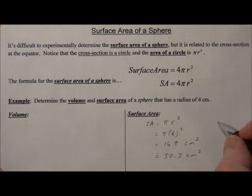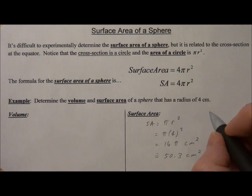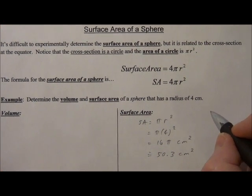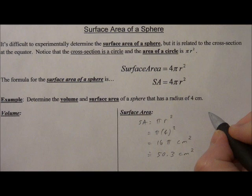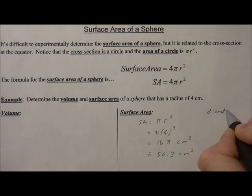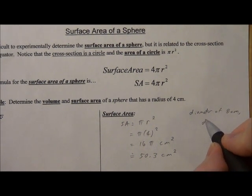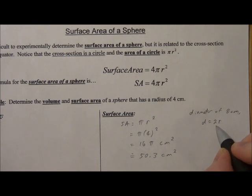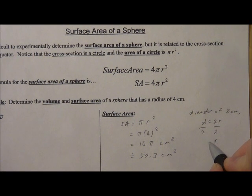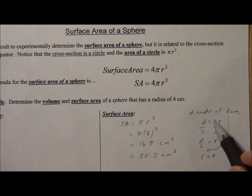Now also be very, very careful of when questions may say, oh, the sphere has a diameter of 4 centimeters, or sorry, 8 centimeters. Remember that the diameter is 2 times the radius, and then the radius then is the diameter divided by 2. So in this case, the radius equals 4, just as we had here originally.